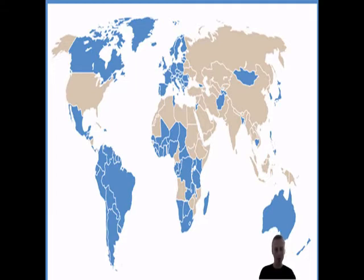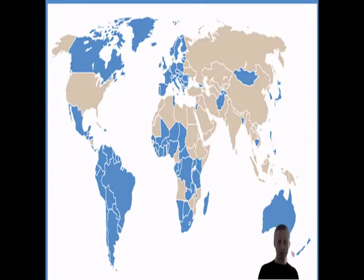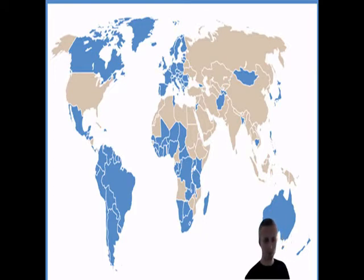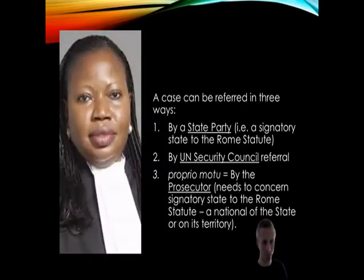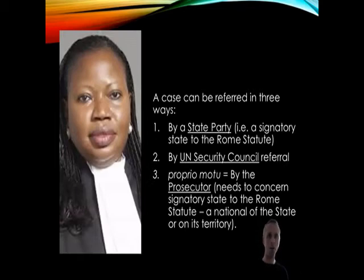It's also important to note the ICC does not have any means of enforcement on its own. It relies very heavily on states' cooperation to secure the arrests of those who have been indicted. To reiterate, the three main referral methods are: by the state itself, by the UN Security Council, or by the prosecutor — among those states that have signed up to the ICC.